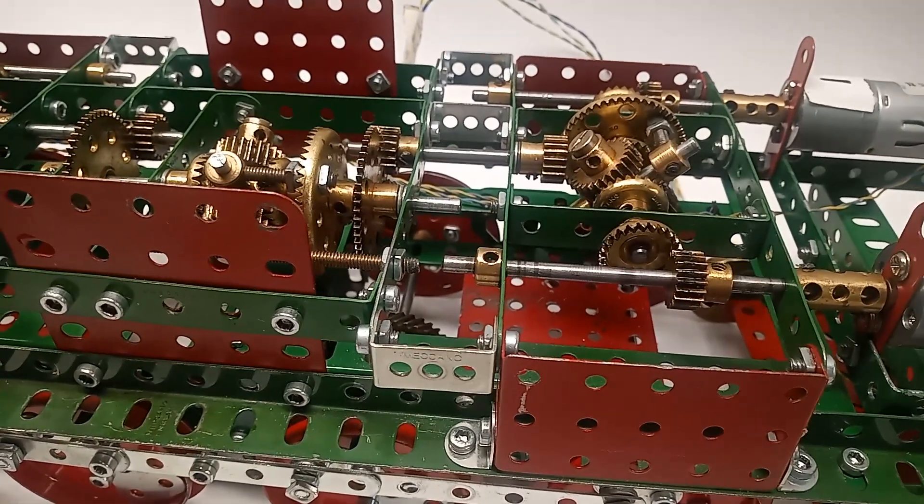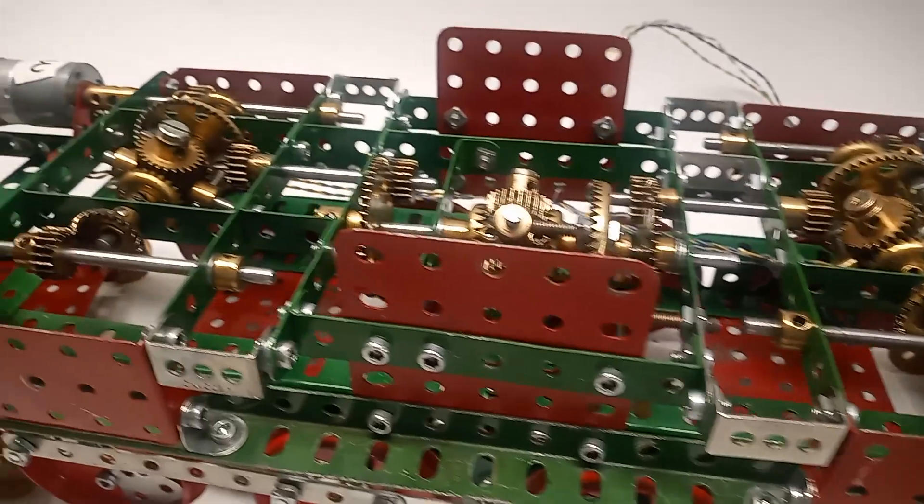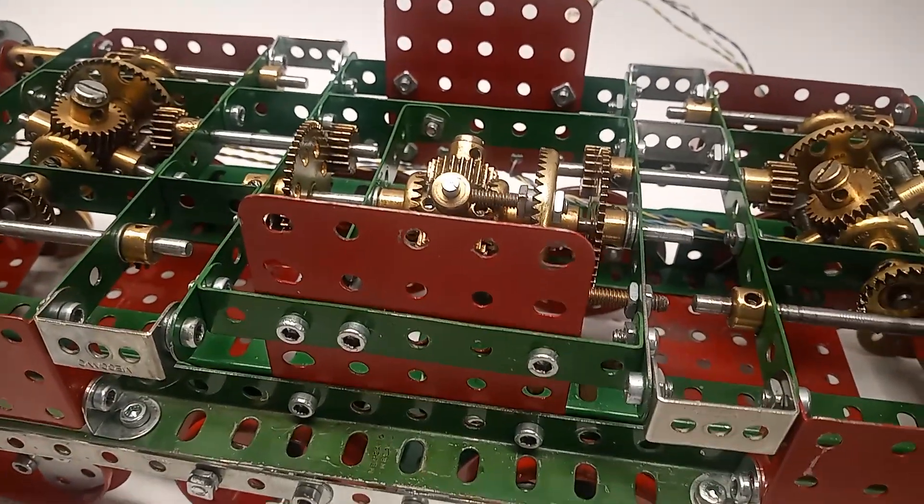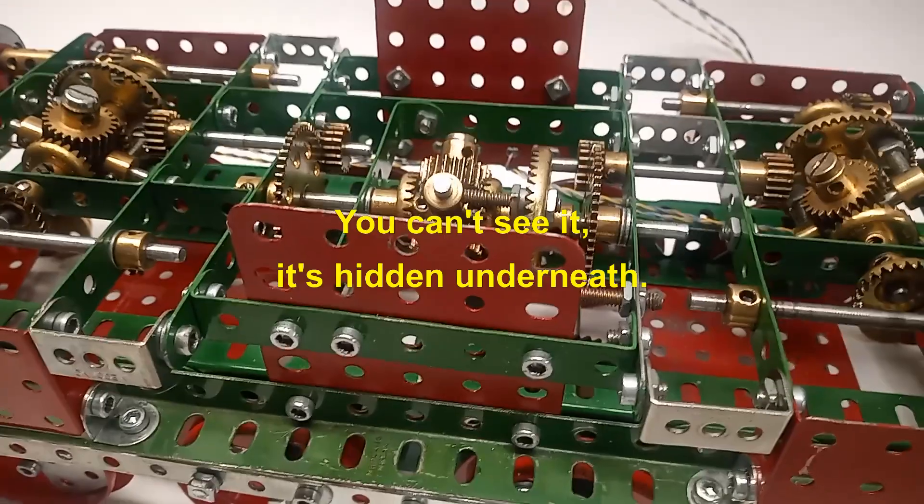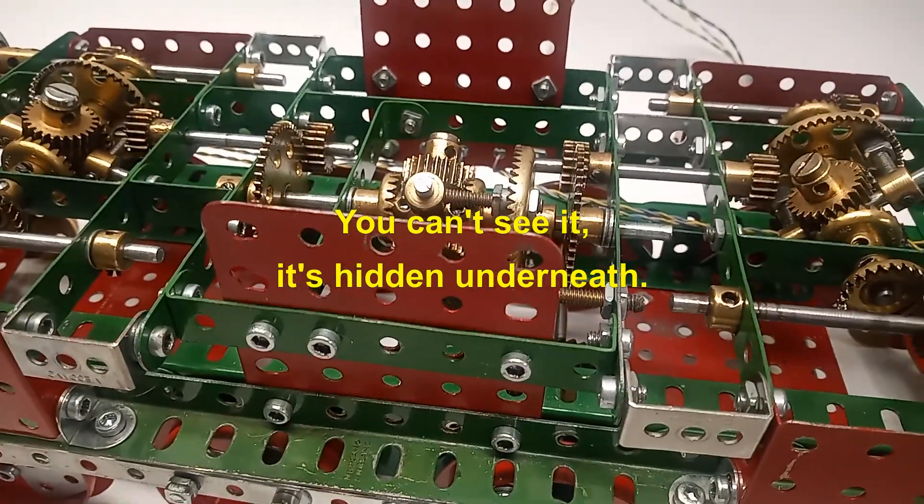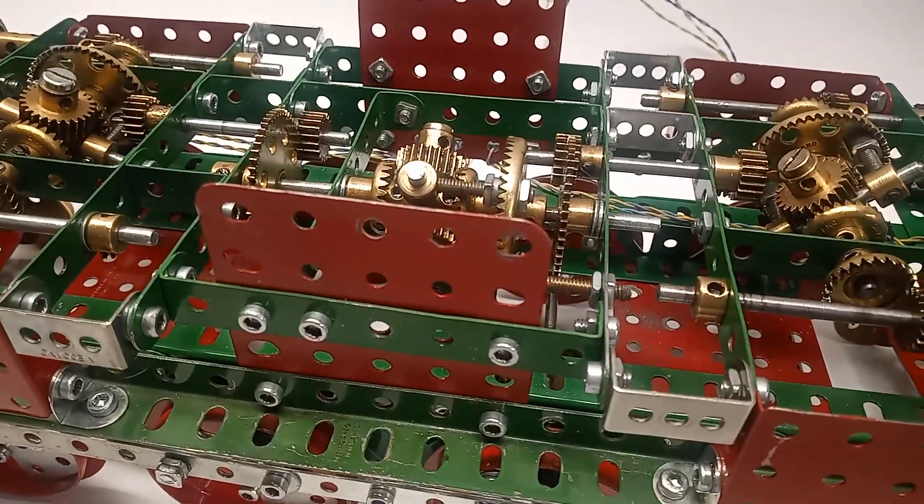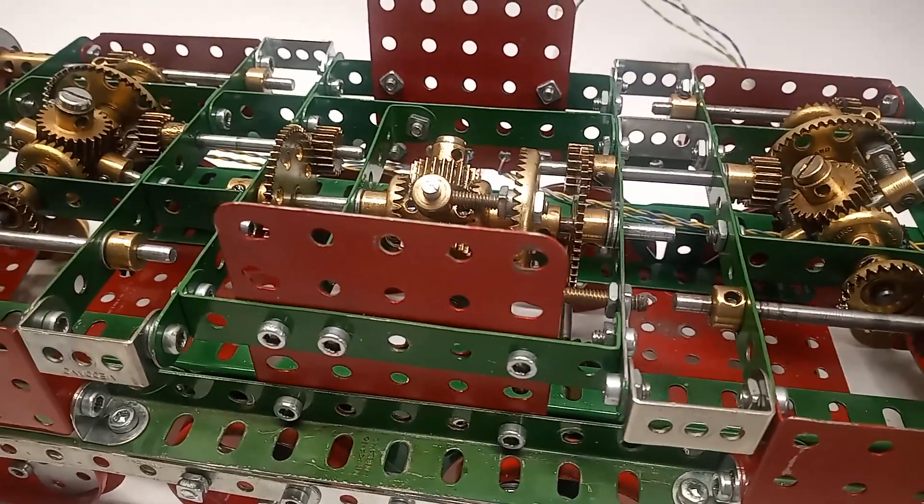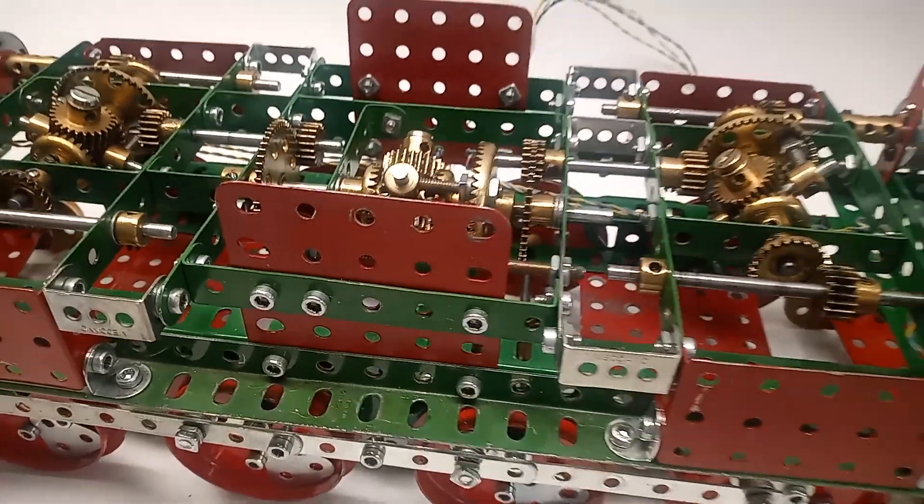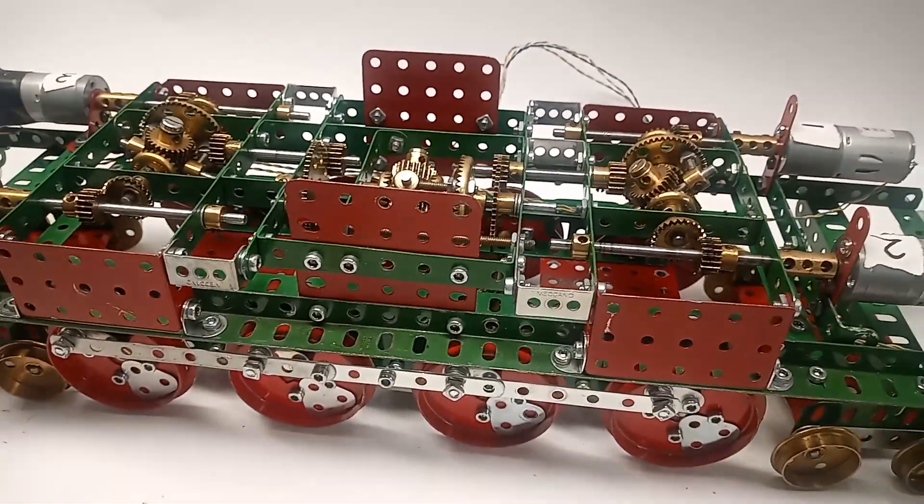The speed increase in the final differential is compensated by the helical gear pair which has a 2.5 to 1, so we are almost back to a unity gain throughout the system.